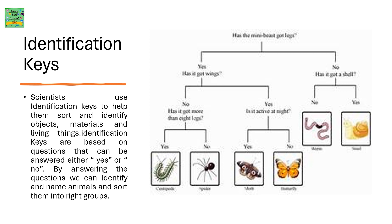Scientists use identification keys to help them sort and identify objects, materials, and living things. Identification keys are based on questions that can be answered either yes or no. By answering the questions, we can identify and name animals and sort them into the right groups.